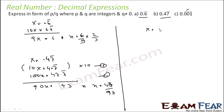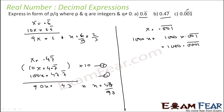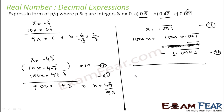The next is 0.001 bar. If x equals 0.001 bar, the point is just before the repeating part, so we are fine. There are 3 repeating parts, so we multiply with 1000. 1000x equals 1.001 bar. Subtracting: 1000x minus x is 999x, and 1.001 bar minus 0.001 bar is 1. So x equals 1 by 999, and that is the answer.